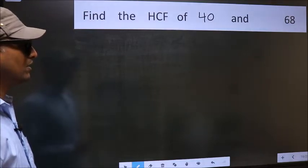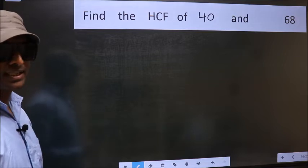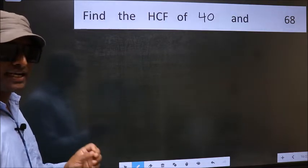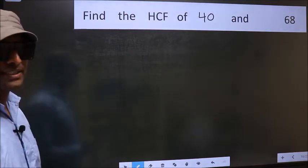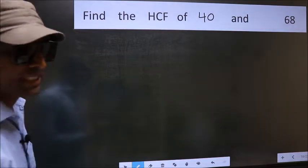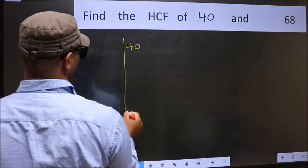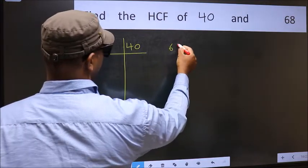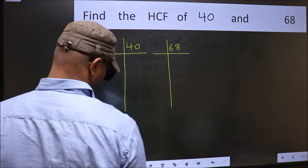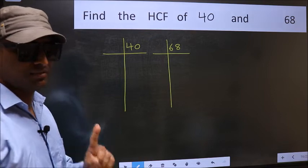Find the HCF of 40 and 68. To find the HCF, we should do the prime factorization of each number separately. What I mean is 40 and 68. This is your step 1.